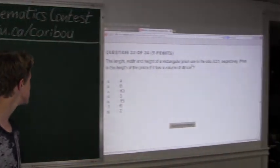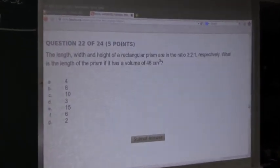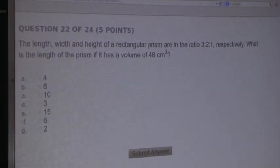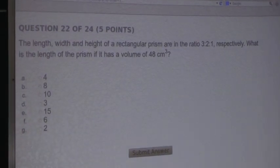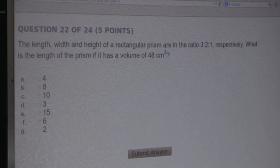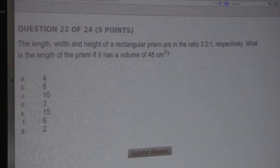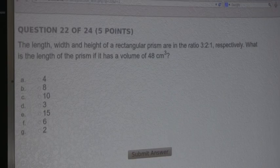So the question is: the length, width, and height of a rectangular prism are in the ratio 3 to 2 to 1 respectively. What is the length of the prism if it has a volume of 48 centimeters cubed?